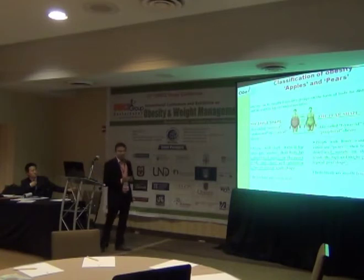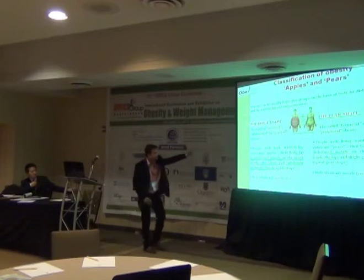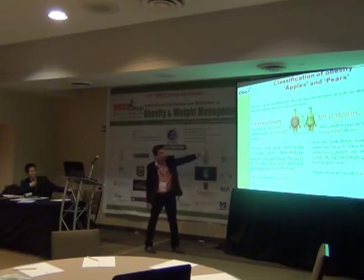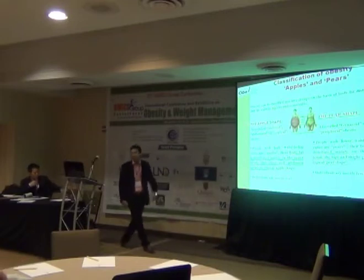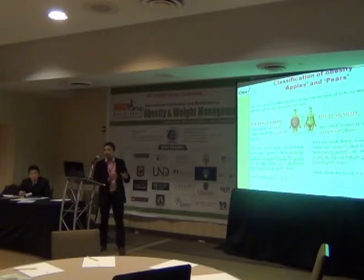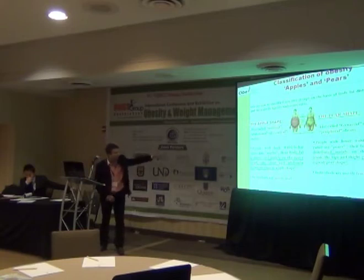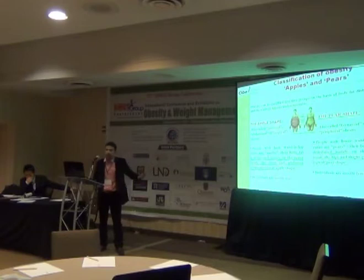In the classification of obesity, there are two classes. Number one is apple shape and the second one is pear shape. Apple shape is also known as android shape or central shape, and pear shape is peripheral obesity. In android shape, body fat is distributed in the upper trunk, chest, and abdomen, giving the typical apple shape. In pear shape, fat is distributed mainly on the lower trunk — hips and thighs — giving the typical pear shape. Apple shape is mostly found in males and pear shape mostly in females.